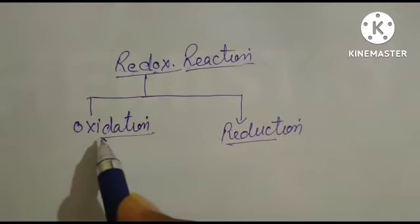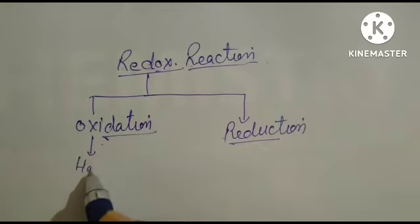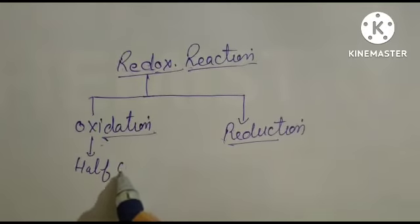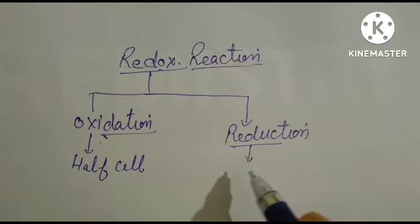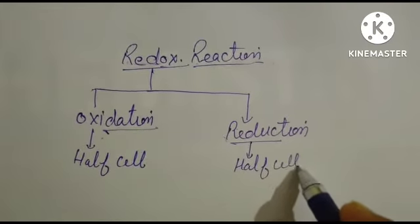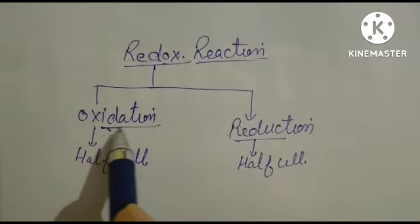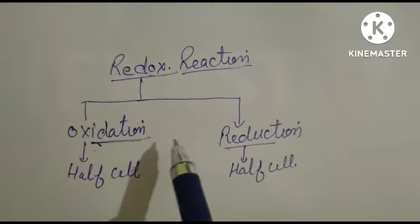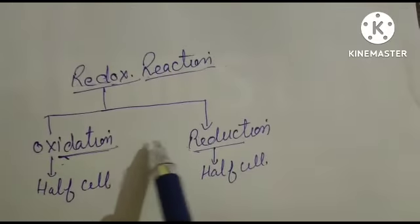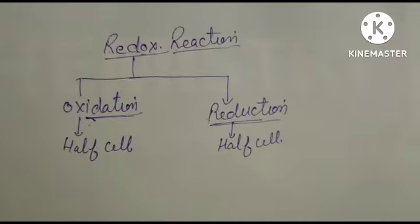For example, oxidation, this is the half cell. Oxidation half cell. This is the reduction half cell. Half cell means without reduction, oxidation is not possible and without oxidation, reduction is not possible. Both reactions are necessary.